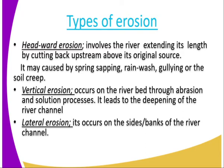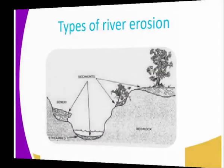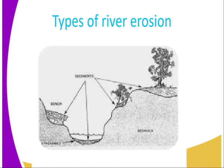Number two is vertical erosion. Vertical erosion occurs in the river bed through abrasion and solution processes — it leads to the deepening of the river channel. The other one is lateral erosion, which occurs on the sides — that is the river banks of the channel. So it erodes the river banks. As you can see, the vertical one deepens the channel, while lateral erosion widens it by eroding the river banks.